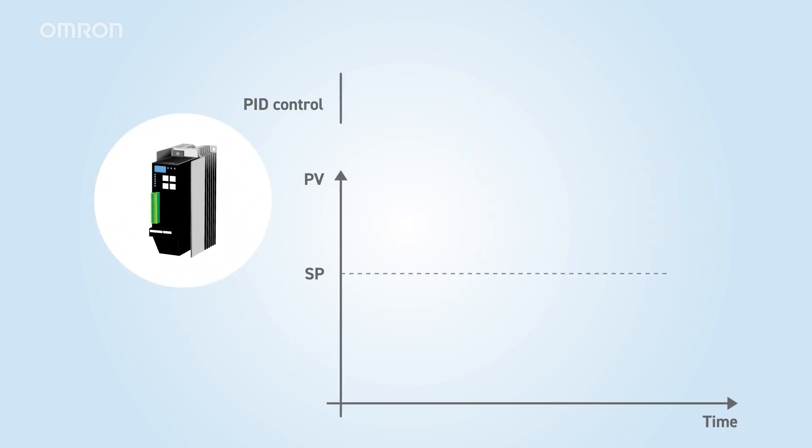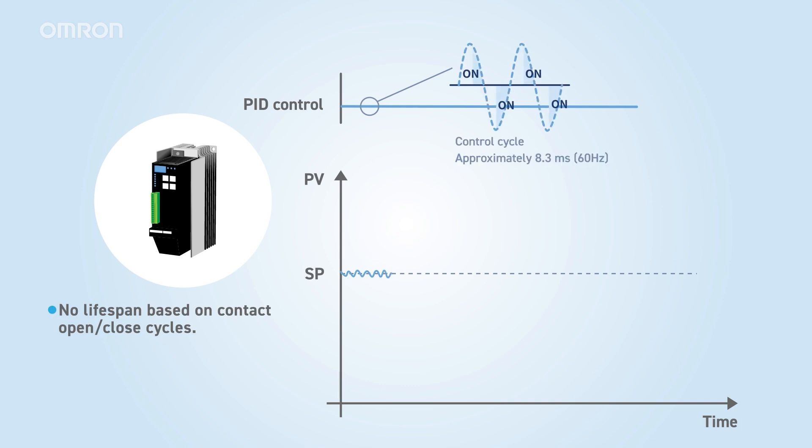Power controllers use semiconductor elements like SSRs, but can switch the heater on and off even faster. They can open and close once per half cycle of an AC power supply, about every 0.3 milliseconds at 60 hertz. For example, they are used with ceramic heaters for rapid heating. Many power controllers have a feature to suppress inrush current, making them suitable for controlling low-resistance heaters at room temperature such as lamp heaters. However, because they are more multifunctional than SSRs, they tend to be larger in size. They also generate heat and can produce noise, which may require countermeasures. Click here for the details about our power controllers.